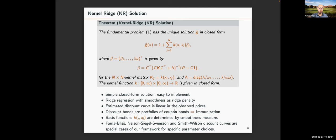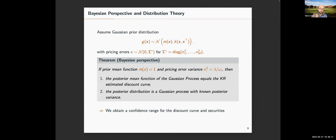We can also provide a distribution theory. If you are willing to assume the discount curve has a Gaussian prior distribution and that pricing errors follow a Gaussian distribution, our KR estimator corresponds to the posterior mean of this Gaussian process. This is useful because the posterior distribution is a Gaussian process with a non-trivial posterior variance, allowing us to provide confidence intervals for the discount curve or any security priced with it.